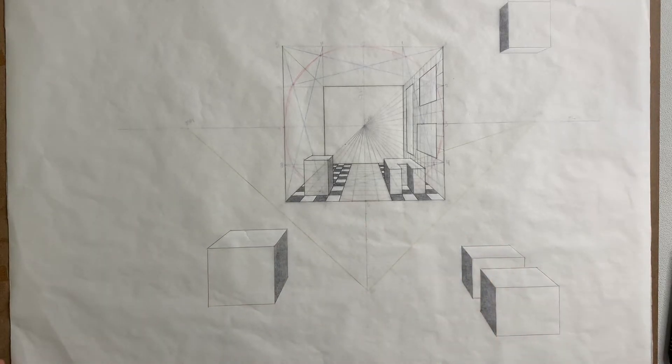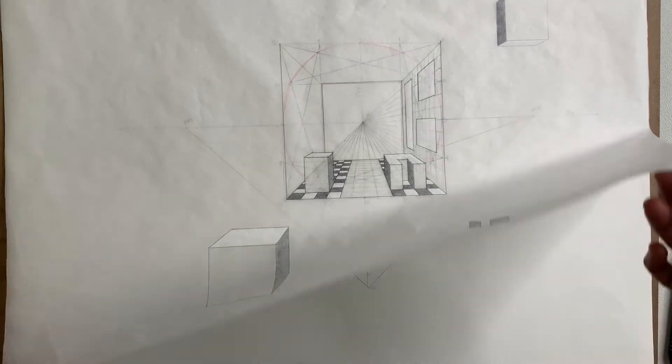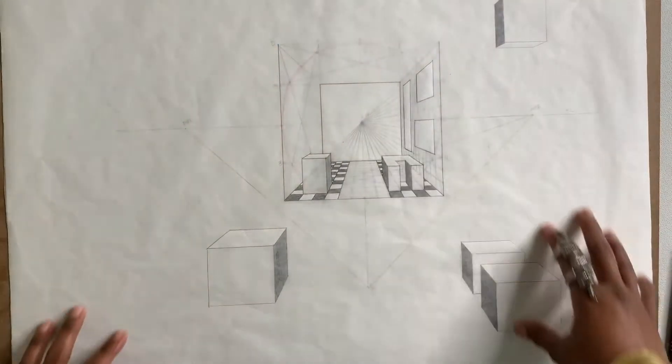So what you're seeing right now is step one and two together. I have step one underneath and step two is on top. I'll be adding two-point perspective to this.